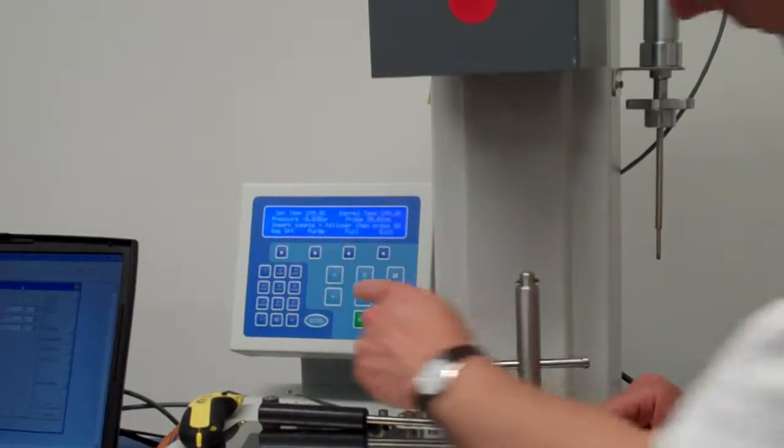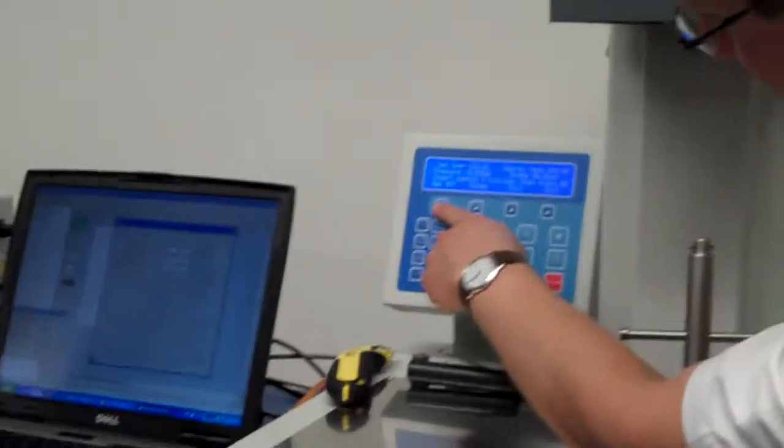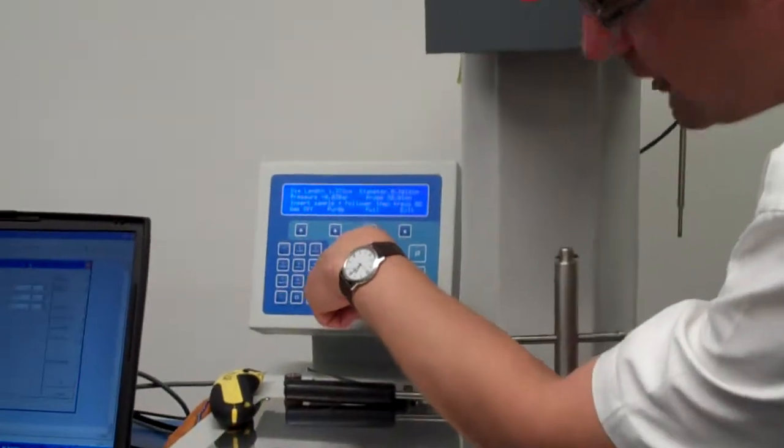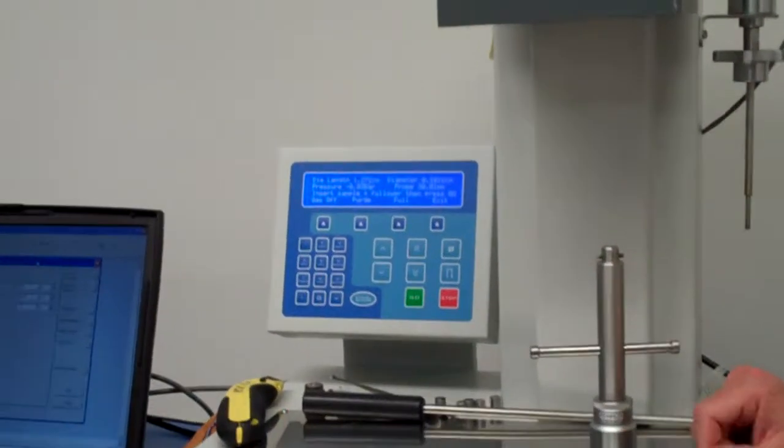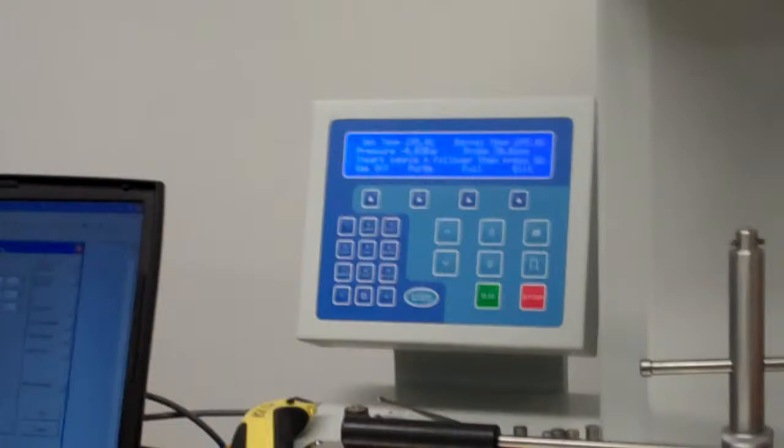We've now got the option on here of gas off, purge, and full. Purge is something that we use and that just allows a very small amount of gas to flow. We'll use purge later. I want to put the full gas on.